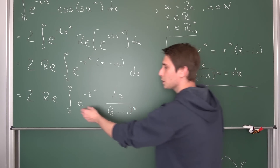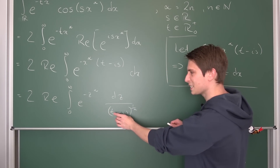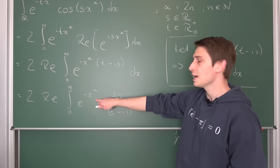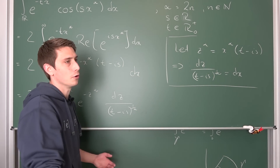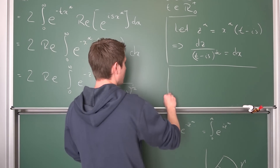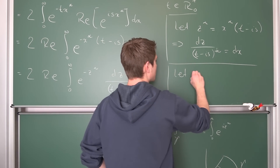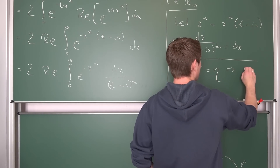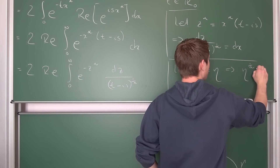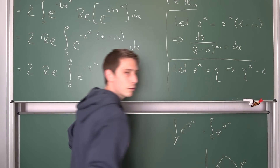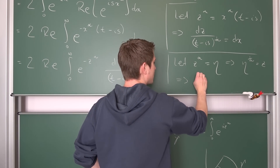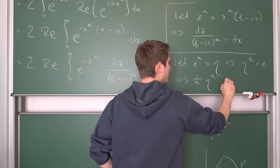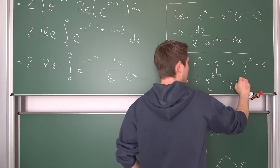With that out of the way, we can actually move on. Let us bring the 1 over (t minus i·s) to the one over alpha to the front, keeping it inside the real part because this is a complex number. Also, we are going to introduce yet another substitution: let z to the alpha equal eta. That also means that eta to the one over alpha is nothing but z. Now if we implicitly differentiate both sides, we get that one over alpha times eta to the one over alpha minus one, times d eta, equals d z.